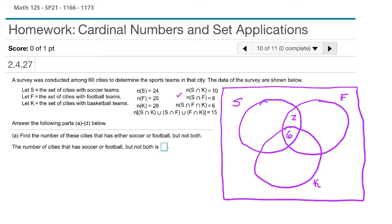Moving out a little further, we look at the region of S overlapping with K. S∩K gives us two regions: the 6 in the center, and then an unknown region. We have a total of 10 for S∩K. We've already accounted for 6, which means we have 4 left in that particular S∩K only region.